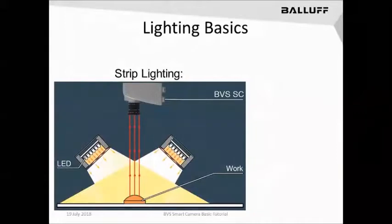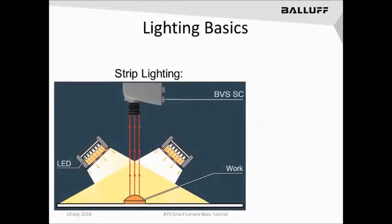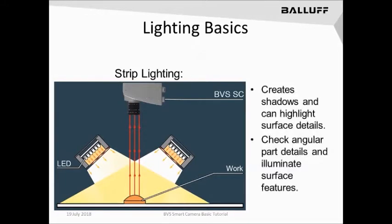Strip lighting, sometimes known as bar lighting, is where two large or small bars of LED lights can be placed and manipulated in their direction at a given object to specifically highlight a feature on that object. This can be used to both highlight features as well as produce shadows or highlight surfaces of an object by simply moving and placing those bar lights at a given angle. Depending on the angularity of the part itself, bar lights can also help specifically illuminate a surface that may be at an angle to the camera.